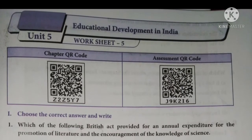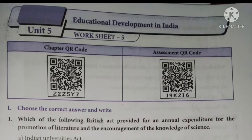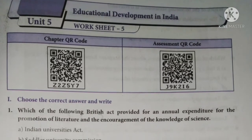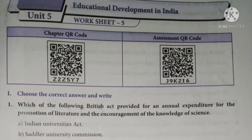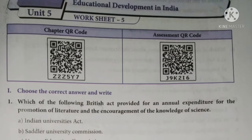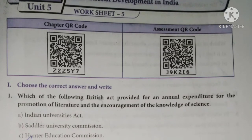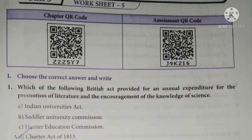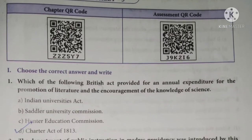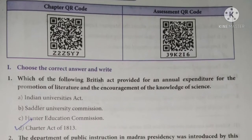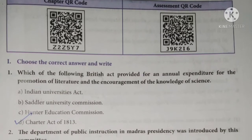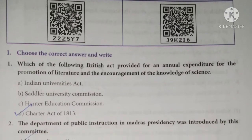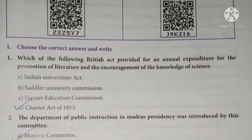The first part: choose the correct answer and write it. Which of the following British Act provided for an annual expenditure for the promotion of literature and the encouragement of the knowledge of science? The Charter Act of 1830 was given above importance for science and literature. The answer is option B.